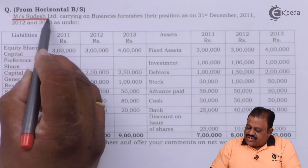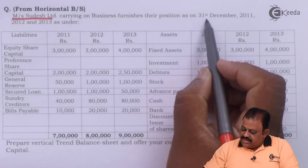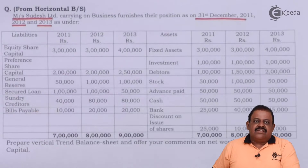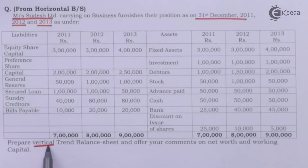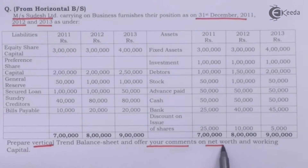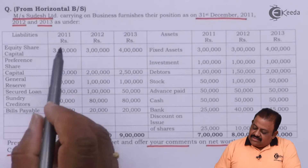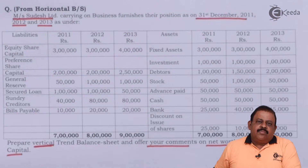Sudesh Limited, carrying on business, furnishes their financial position as on 31st December 2011, 2012, and 2013. We are required to prepare a vertical trend balance sheet. This is a horizontal balance sheet given in the question, which we are required to convert first into vertical format.